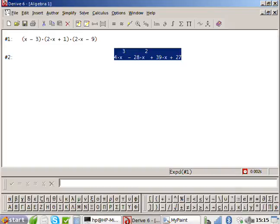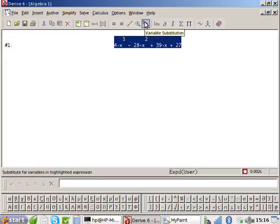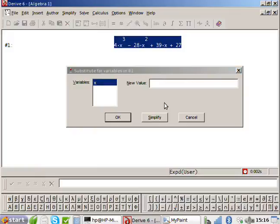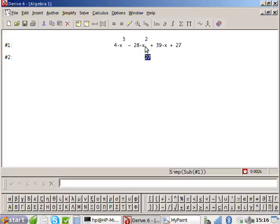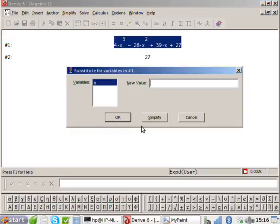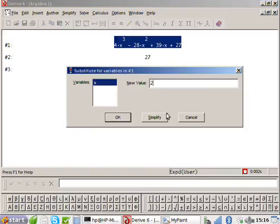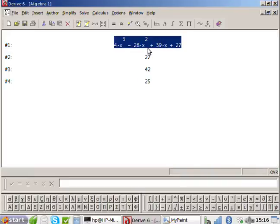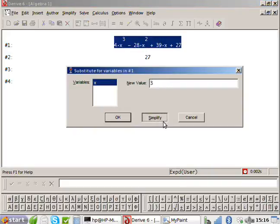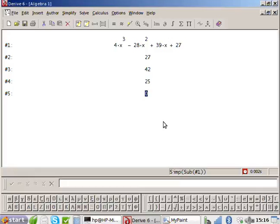So what you need to do is you need to start trying different values of x until you find a root. So for example, you could try x as 0. Now I know x as 0 is not going to work, because what am I left with? 24. I could try x as 1. Will that work? No. I could try x as 2. Will that work? No. I could try x as 3. Will that work? 0. So x equals 3 is a root. That means x minus 3 is a factor.